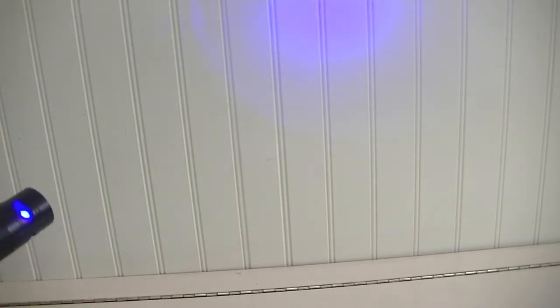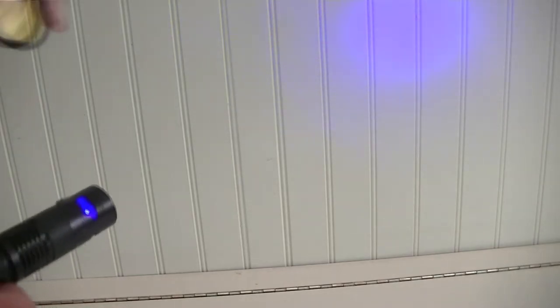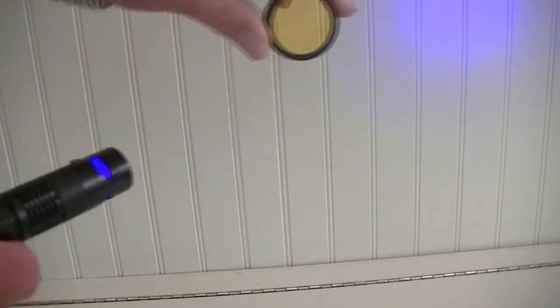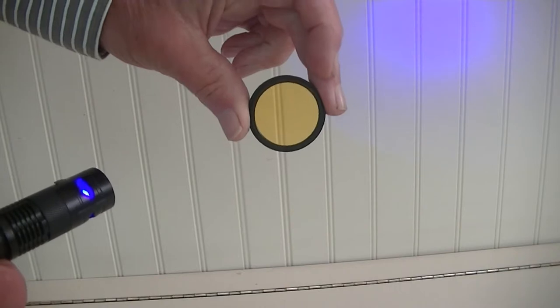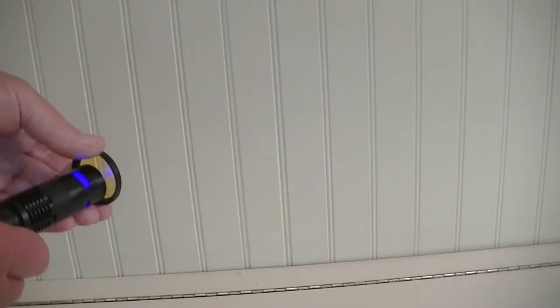For that we need a yellow blocking filter. I've got a camera filter here that is a fairly strong yellow color. If we put that in front of the blue light you can see it cuts out most of the light.